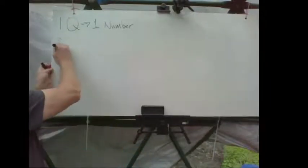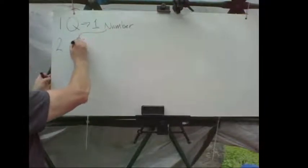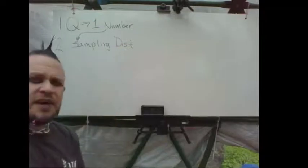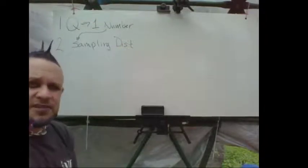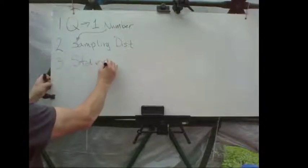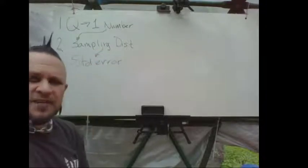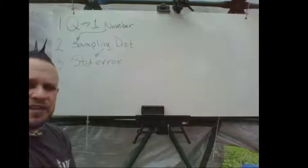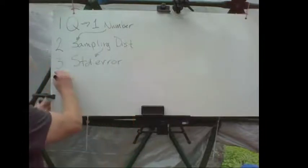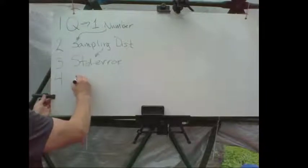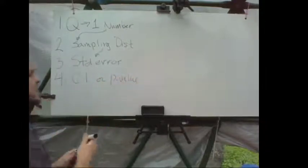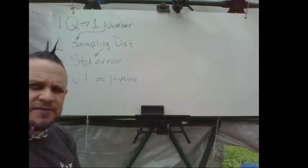Number two: the sampling distribution of that number. What is the sampling distribution? We usually need to know things like the mean of that distribution and its standard deviation — the standard error. With t-tests, the standard deviation of the sampling distribution is the standard error. And finally, we find a confidence interval or a p-value, both of which use the standard error of the sampling distribution.